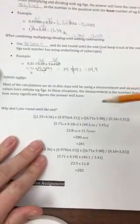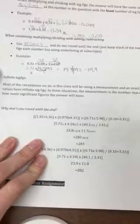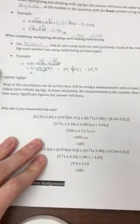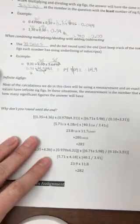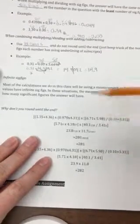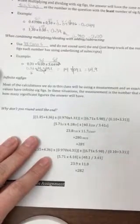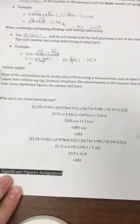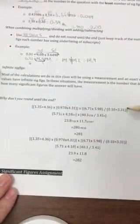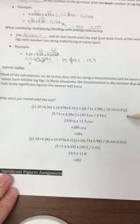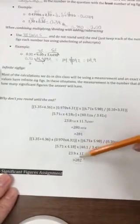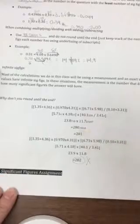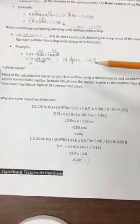A note about infinite sig figs: most of the calculations we do in class will use one measurement and also exact values. Exact values have infinite significant figures. In situations where you have a measurement and you're multiplying by an exact value with infinite sig figs, you just go with the number of sig figs in your original measurement — basically ignore the other one. Also note: when we're not rounding through each step, we get 281, but if you round at each step you end up with 282 — the wrong answer. So make sure you're saving your rounding until the very last step.